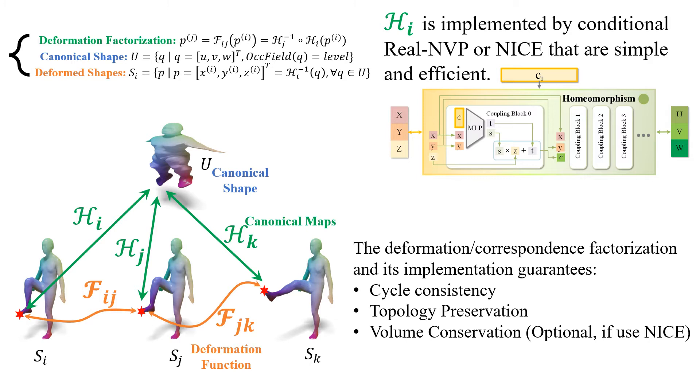Our representation guarantees to produce cycle-consistent deformation or correspondence and preserve the topology of the surfaces. If desired, the canonical maps implemented by NICE will preserve the volume of the geometry.